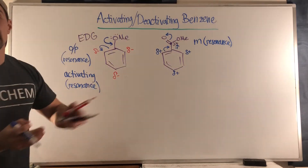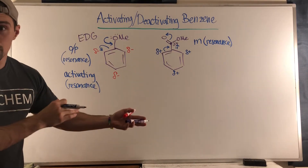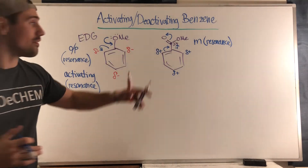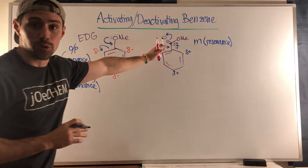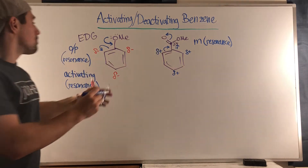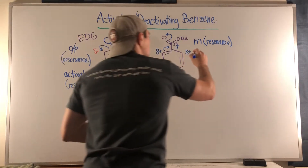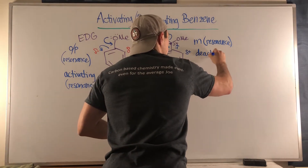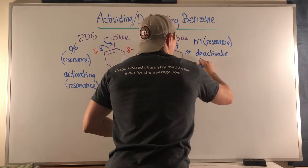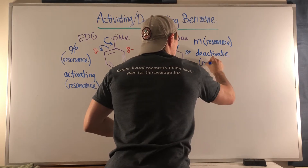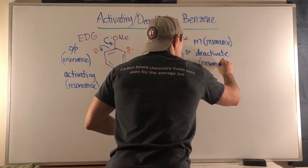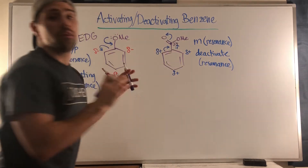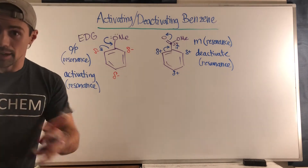Because we're actually taking electrons out of the ring, the ring is less negative as a result of this group, so we actually deactivate the ring, and that occurs via resonance.